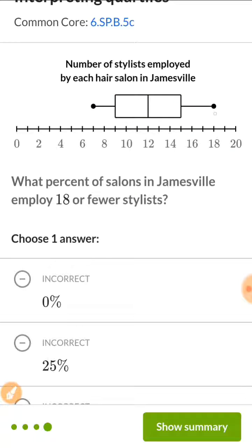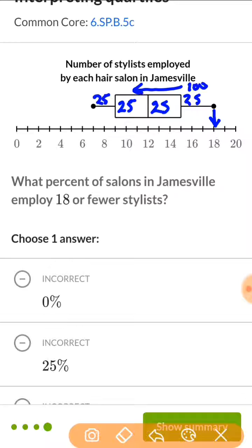And then finally, at the maximum, that would leave 25, 50, 75, 100% of the data is less. And 0% must be more because nothing is more than the max.